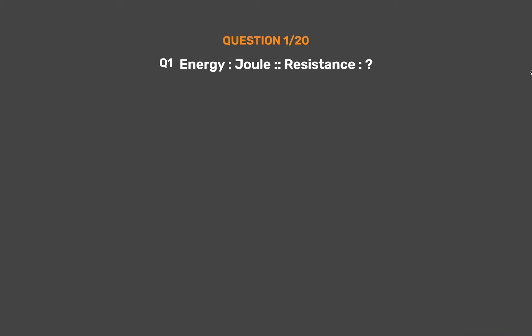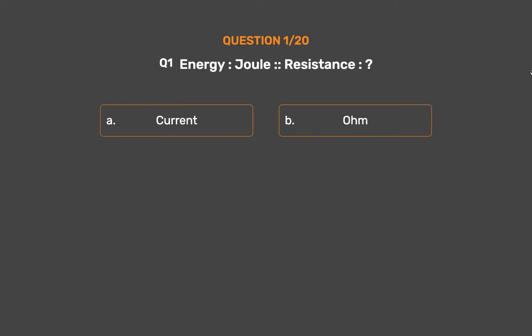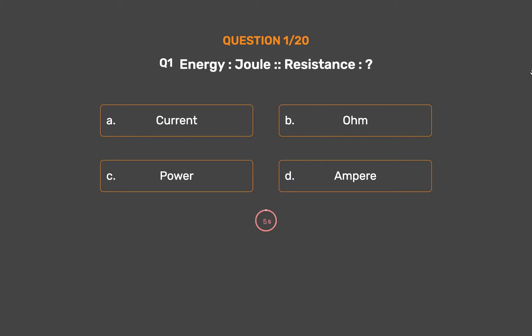Question No. 1. Energy : Joule :: Resistance : ? Option A: Current. Option B: Ohm. Option C: Power. Option D: Ampere. The correct answer is Option B, Ohm. The second is the unit of measuring the first.